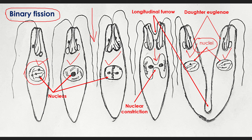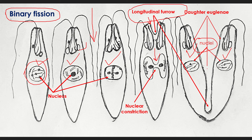Division of the nucleus by mitosis is then followed by division of the cytoplasm by cytokinesis. During cytokinesis, a longitudinal furrow appears in the cytoplasm from the anterior side of the Euglena, which deepens down until the Euglena divides into two daughter Euglenas.